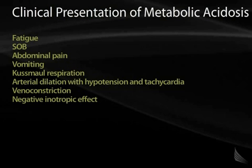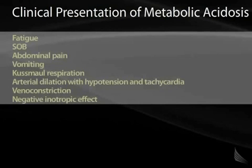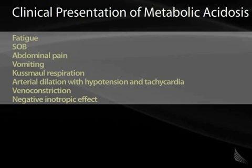The clinical presentation of metabolic acidosis is varied. It can be as nonspecific as fatigue or abdominal pain, or as extreme as arterial dilatation with hypotension and tachycardia. Without measurement of a pH, it is not clear simply by clinical features if a metabolic acidosis is present. Therefore, arterial blood gas sampling is necessary anytime you suspect a metabolic or even respiratory acidosis.